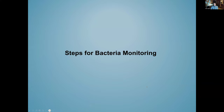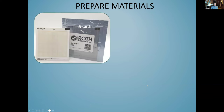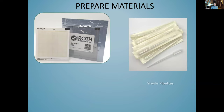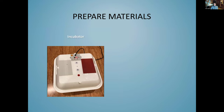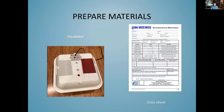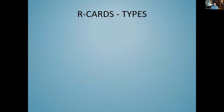Let's talk about the detailed steps of bacteria monitoring. First, you want to get your materials ready. Currently we're using a methodology called R-cards — pre-treated cards that you just add a water sample to and then incubate. You collect your sample with sterile pre-wrapped pipettes, and you also need a thermometer. Other materials include an incubator; after capturing the sample we incubate it, record information on the data sheet as we collect, and record more information after counting colonies.